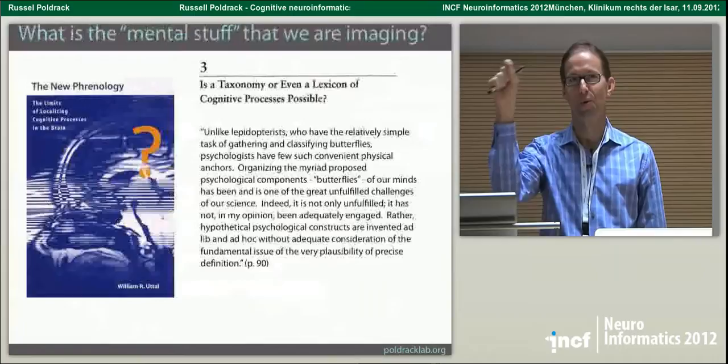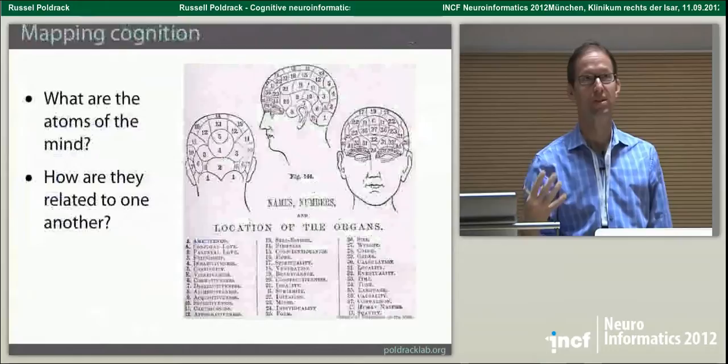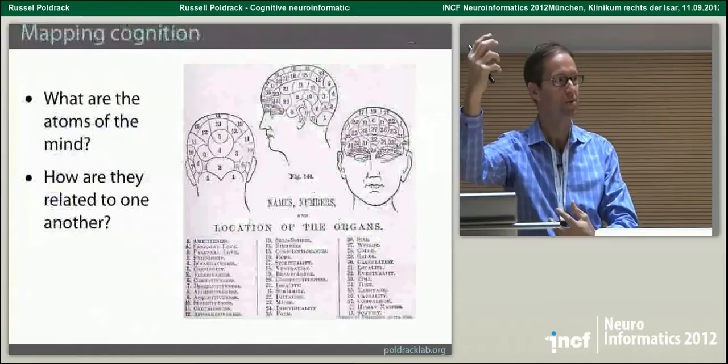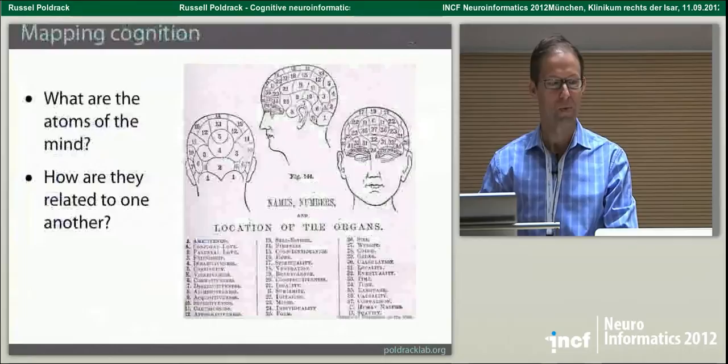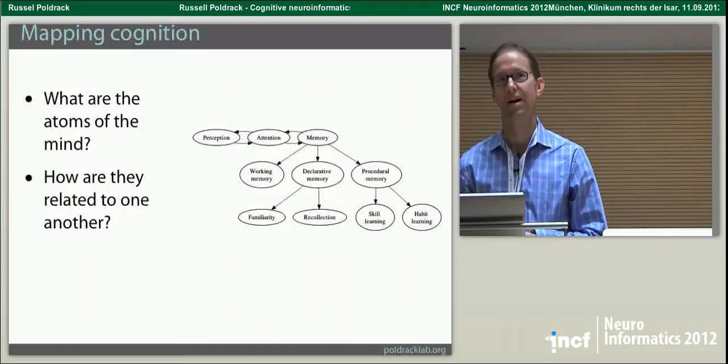It could be that there are different cortical columns within the anterior cingulate doing all these different things, but they're really distinct — if we had the right resolution we could see that. It could be that the ACC does all those different things but in different neural contexts, so when it's communicating with the left posterior parietal it does one thing and when communicating with the caudate nucleus it does another. Or it could be that we're just chopping up the mind the wrong way — that these are not really fundamental cognitive functions and we're kind of misled about the structure of the mind.